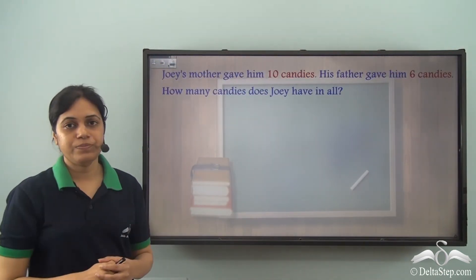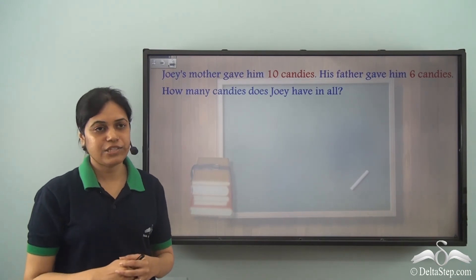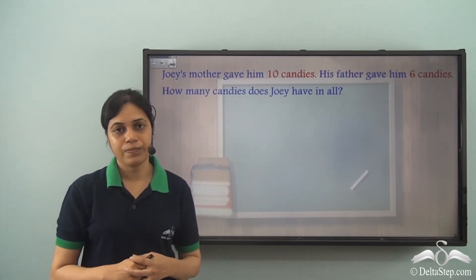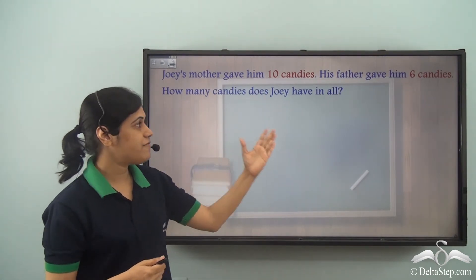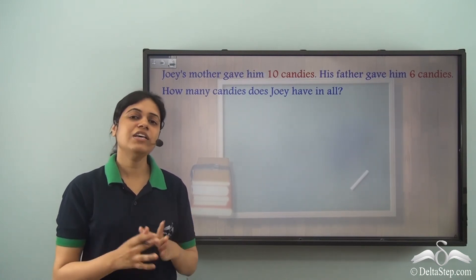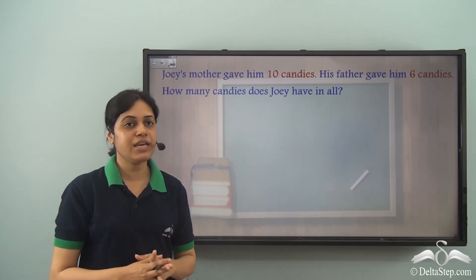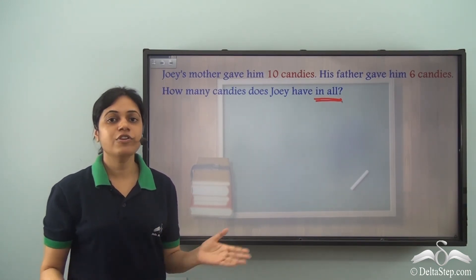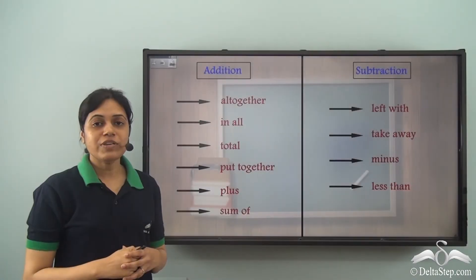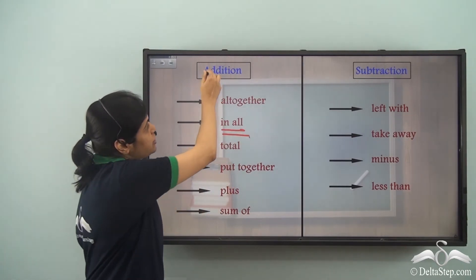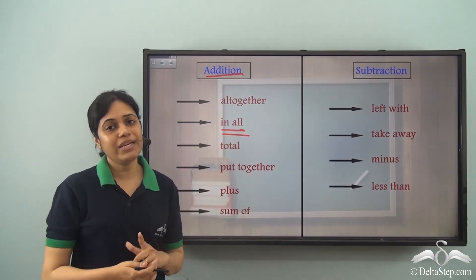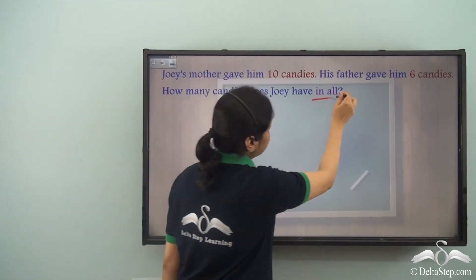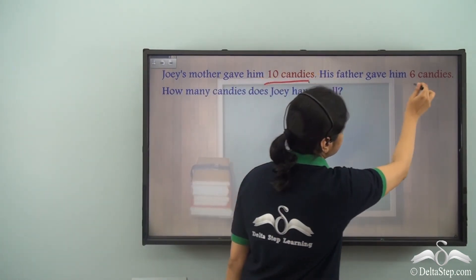Let's solve another problem. Joey's mother gave him 10 candies. His father gave him 6 candies. How many candies does Joey have in all? His mother and father both gave him some candies, and he wants to know how many candies he has in all. In all means how many candies does he have all together, combined, or put together. So, in all is another name for addition — when we are asked how many candies does Joey have in all, we need to add.